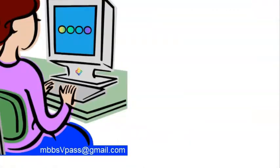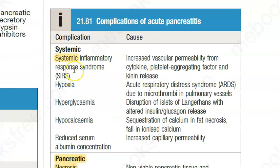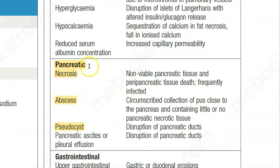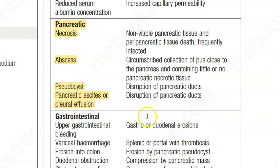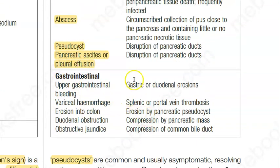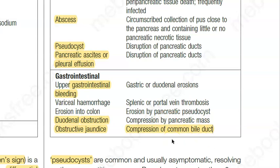If untreated, acute pancreatitis has both local and systemic complications. Local pancreatic complications include necrosis, abscess, pseudocyst, pancreatic ascites, and pleural effusion. Gastrointestinal complications include gastric or duodenal erosion, upper GI bleed, variceal hemorrhage, erosion into the colon, duodenal obstruction, and obstructive jaundice due to compression of the common bile duct by the enlarging pancreas.